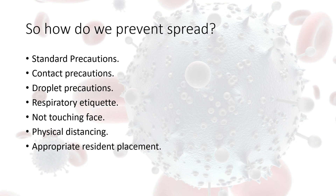Physical distancing — originally called social distancing — emphasises the physical distance between people. For the general public, this means keeping about two metres, roughly six feet, between people. When looking after residents, we look at approximately one metre. What we do in terms of PPE and hand washing in relation to that distance will be covered shortly. Appropriate resident placement is also very important in preventing spread if we have COVID in our centre.